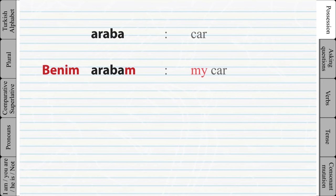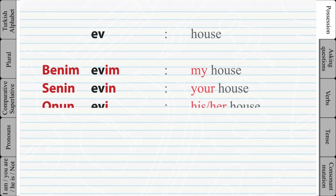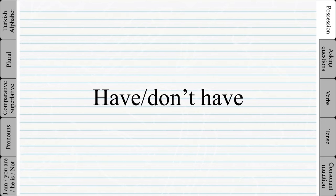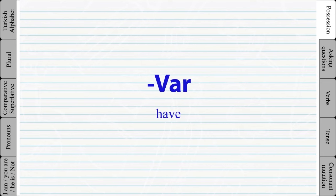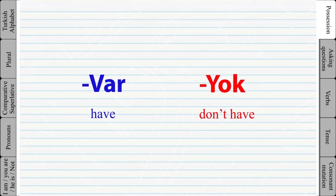We only use the word inside the square brackets when the last letter of the word is a vowel, so the letter 's' works as a buffer between the two vowels. To say 'I have something' in Turkish is very easy — simply add the word 'var' after the possessive suffix. To say 'I don't have something', just change 'var' to 'yok'.